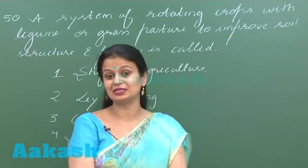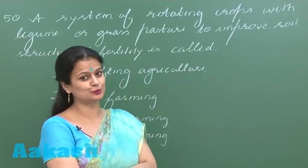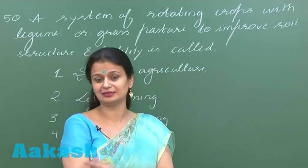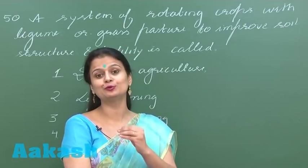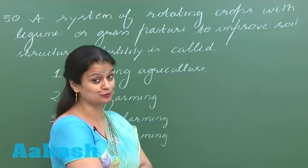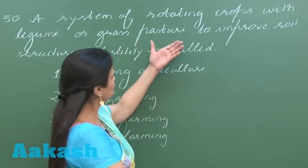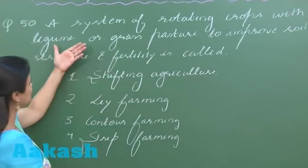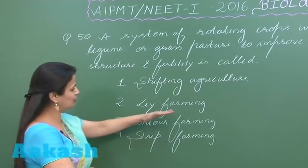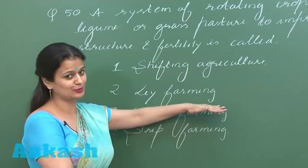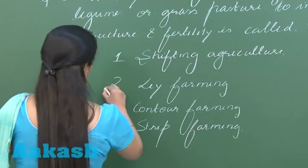Leguminous plants are associated with nitrogen-fixing bacteria, that is Rhizobium, which will improve the content of nitrogen in the soil. So legumes are used for crop rotation, and the farming associated with this is known as ley farming.